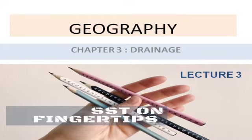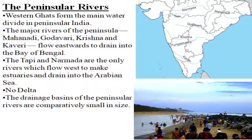Alright class 9, we will start the third lecture of Chapter 10. First we talk about the peninsular river. As you have seen, we have talked about the Himalayan river, and the second part is peninsular river — about the rivers of South India.